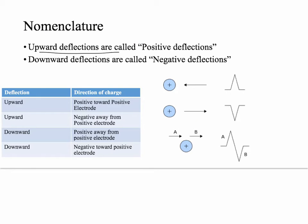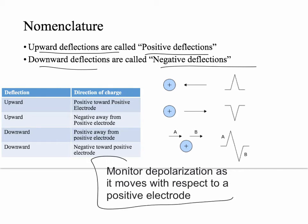Upward deflections are called positive deflections and downward are called negative deflections. This refers to how the voltage is traveling with respect to the positive electrode. As current is going towards the positive electrode, you get an upward deflection; as it's going away, you get a downward deflection. When I say current here, I'm talking about the intracellular positive charge — the positive charge moves into the cell, causing depolarization. So essentially we're monitoring depolarization as it moves toward or away from a positive electrode. You can also monitor repolarization with respect to a positive electrode as well.